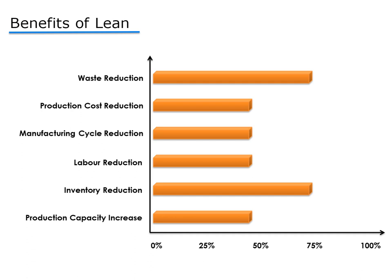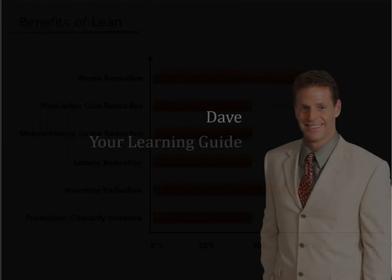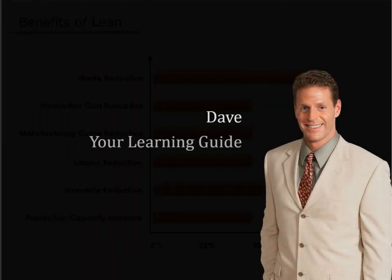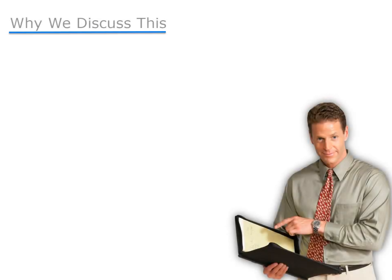For applying lean, we need to understand what lean is all about. My name is Dave and I'll be your learning guide for this module on Introduction to Lean. Lean originated from the manufacturing industry, specifically from Toyota, where it is known as the Toyota Production System. Even though the origins of lean were from manufacturing, the principles and tools of lean are applicable to all types of processes and industries.